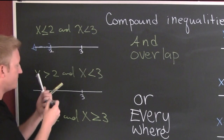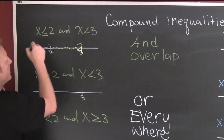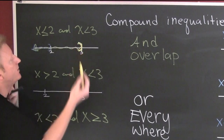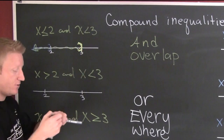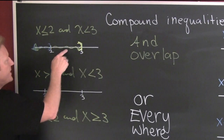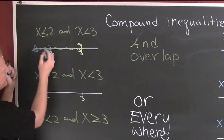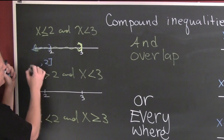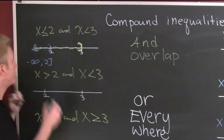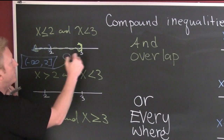On x less than or equal to three, I need to shade also to the left. This one is open on this side because it doesn't have an 'or equal to.' Now this is the AND case, so I'm looking for where they overlap. They overlap from two to minus infinity — or written correctly as an ordered interval, from minus infinity to two, including two. Done.